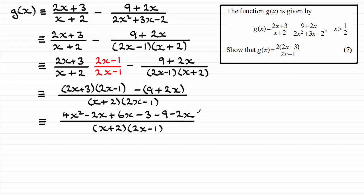And then I'm just going to group up like terms on the top here. And if you do that, you'll get 4x squared plus 2x minus 12.